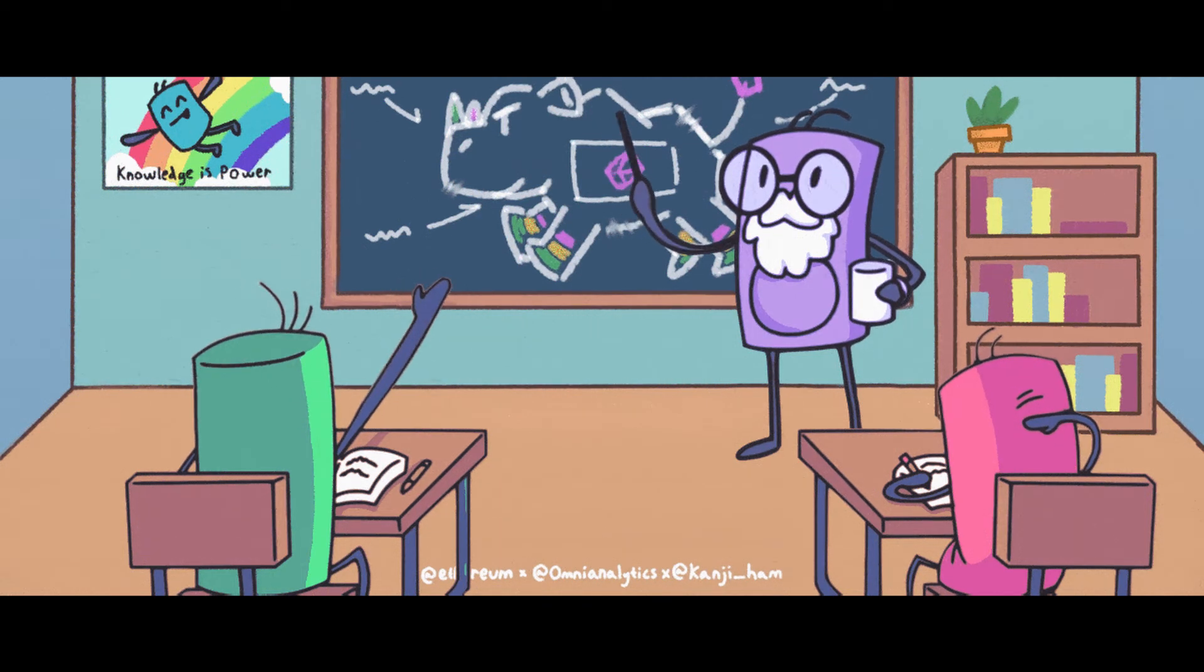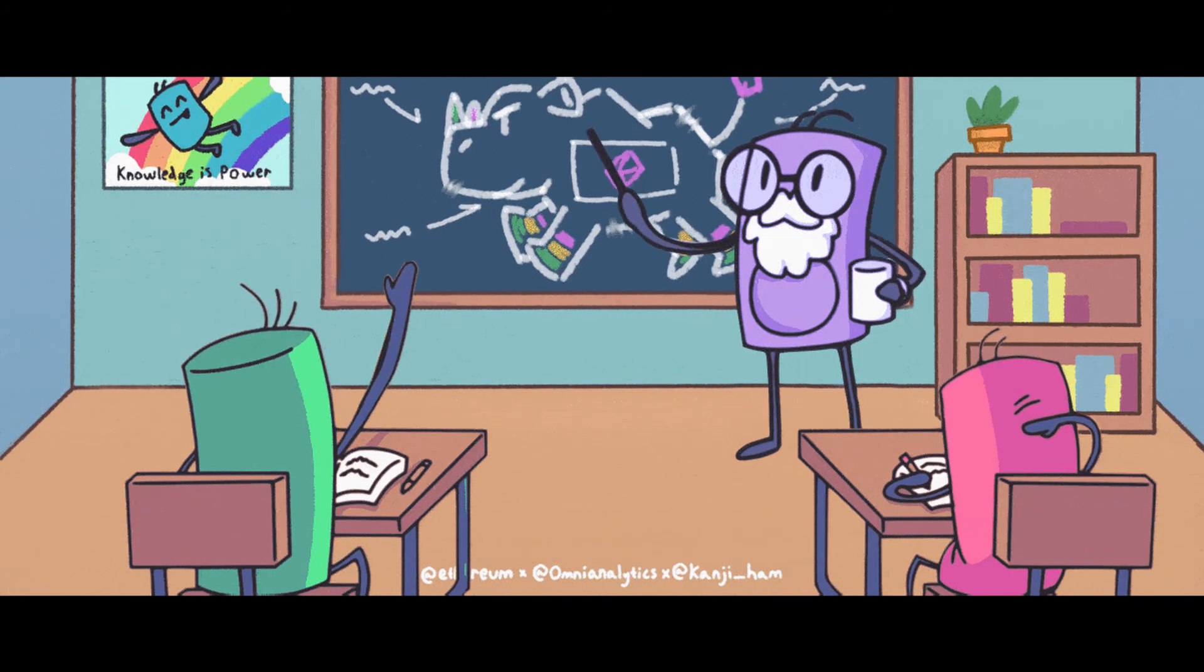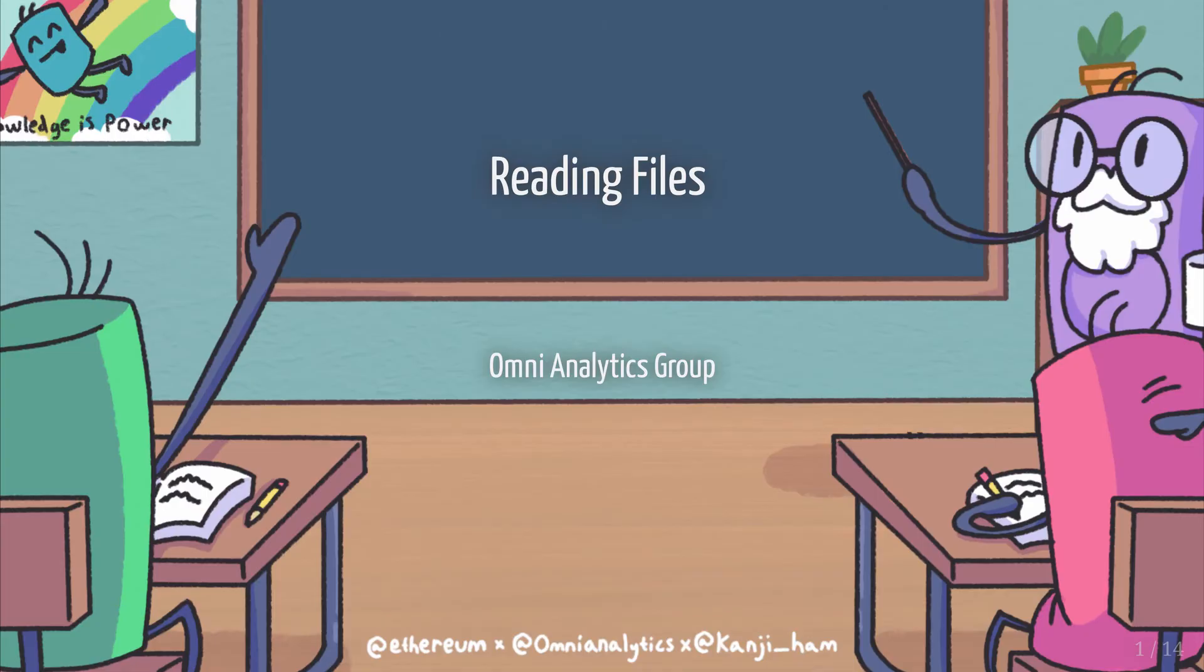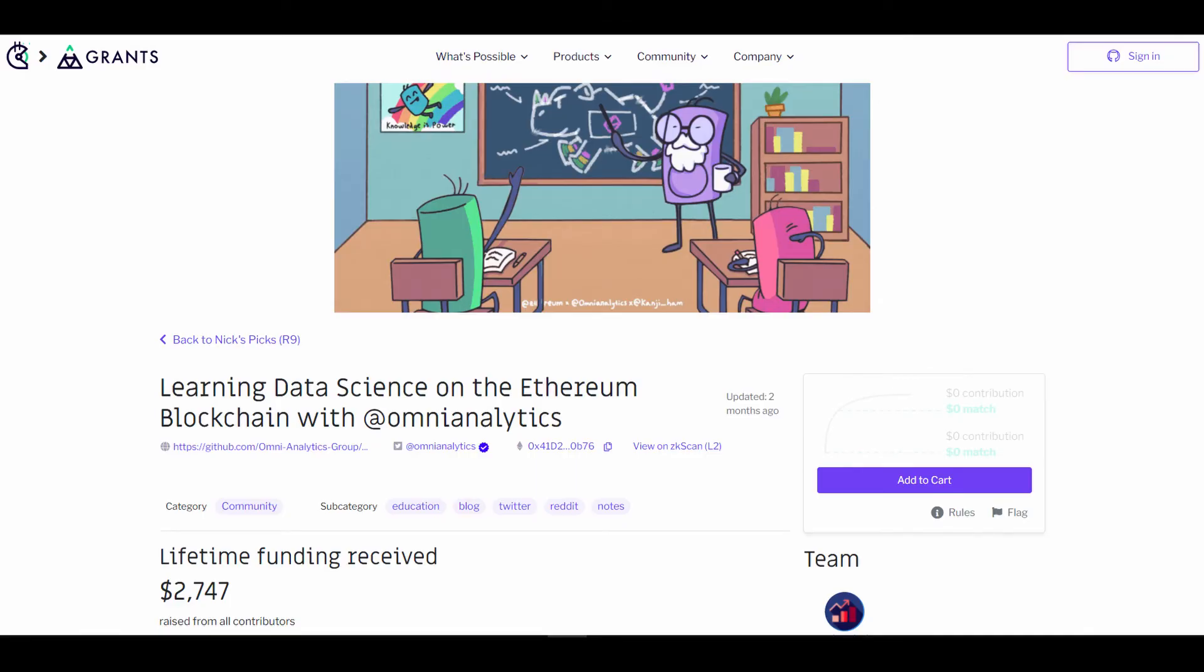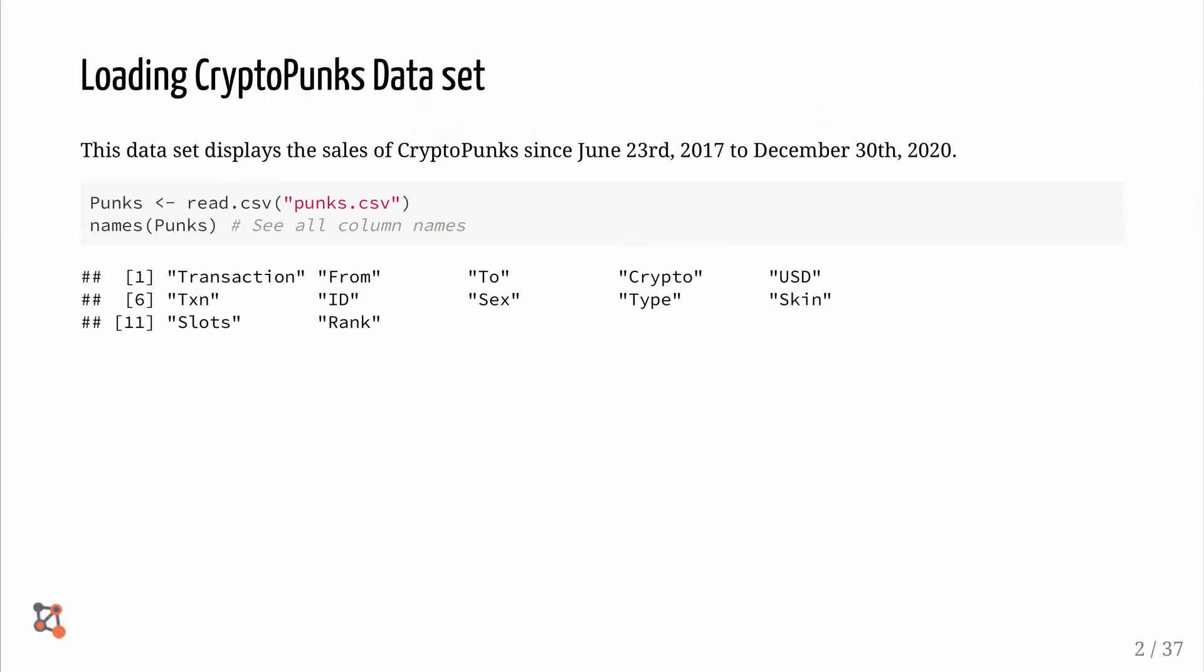Welcome back to learning data science on the Ethereum blockchain with OmniAnalytics. In the last video, we learned about reading Excel and CSV files with R. In this video, we will be learning about R basics. All the files used in this video will be provided on GitHub. Check out the links in the description box to find out more about our Gitcoin grant and CryptoPunks. Let's get started.